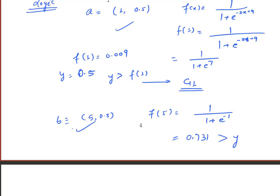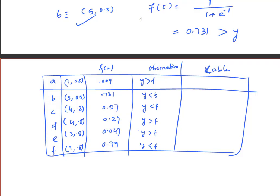Using Desmos, a table is created to find f(x) values using each x-coordinate and compare with y. For A, y > f so it's G1. For B, y < f so it's G2. For C, f value is 0.27 which is greater than y = 0.2, so y < f and it goes into G2. Similarly, the remaining points are classified, giving results: G2, G1, G1, and G2.